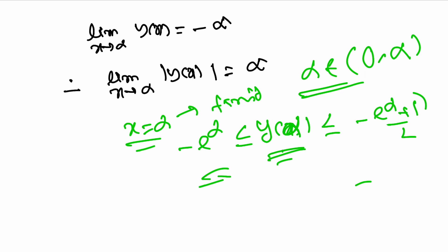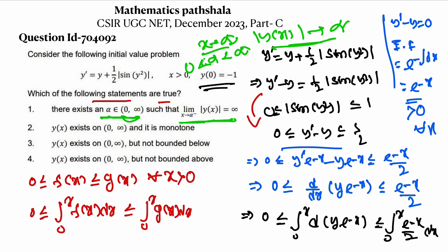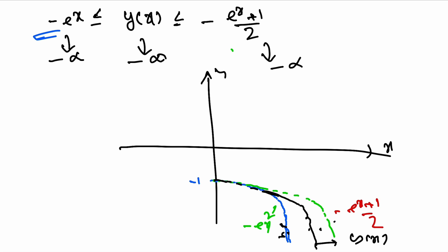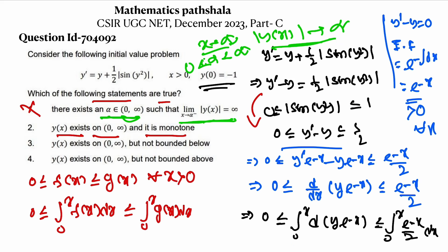Option 2 says y(x) exists on (0, ∞) and is monotone. We can see that y(x) is bounded by two curves — both monotone decreasing — and y(x) itself goes to -∞ as x → ∞. So y(x) is also monotone decreasing. Therefore option 2 is true: y(x) exists and is monotone.